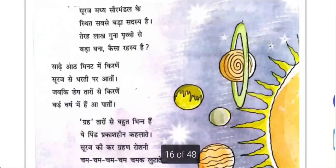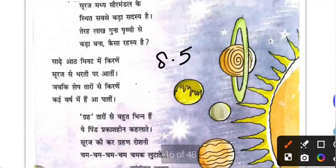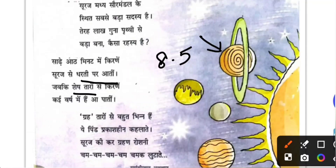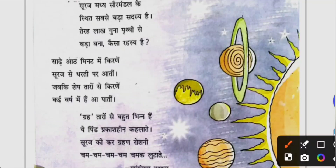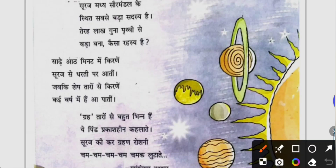The sun's rays take 8.5 minutes to reach the Earth. From the sun to the Earth, the light travels in 8.5 minutes. But for the rest of the stars, it will take years. From this, you understand that the sun is the star which is nearest to the Earth. The other stars are very far away, so their light rays take years to reach us. The sun is the nearest star to the Earth.